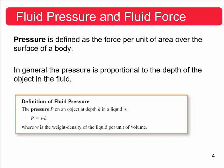So the definition of fluid pressure is the following. The pressure P, so P is pressure, of an object at depth H in a liquid is the pressure is equal to just a simple multiplication of W times H. And this is where W is what we call the weight density of the liquid per unit of volume. So the weight density of the liquid is different for different liquids or different fluids.